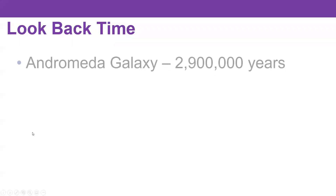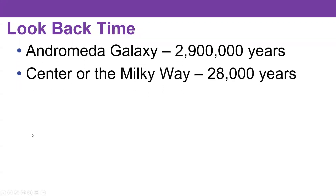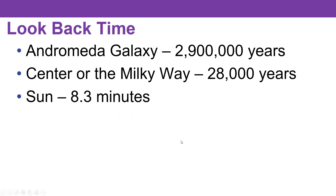So we're seeing this galaxy how it was 2.9 million years ago. Astronomers sometimes refer to this as 'look-back time.' What this means is that the further you look out into space, the further you're looking back into time. So it's kind of like a telescope is a time machine of sorts. If we look at the center of our galaxy, we're seeing it how it was 28,000 years ago because it is 28,000 light years away.